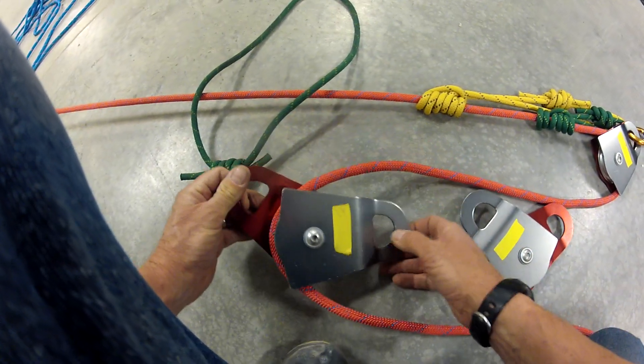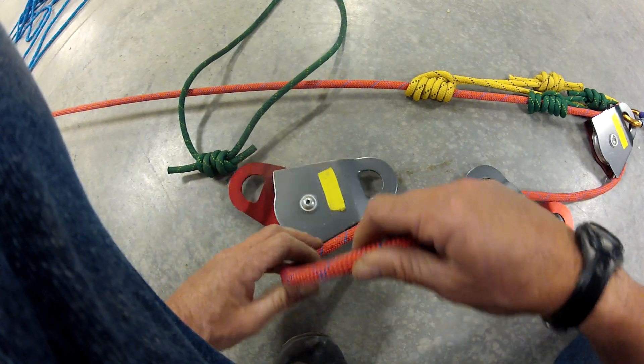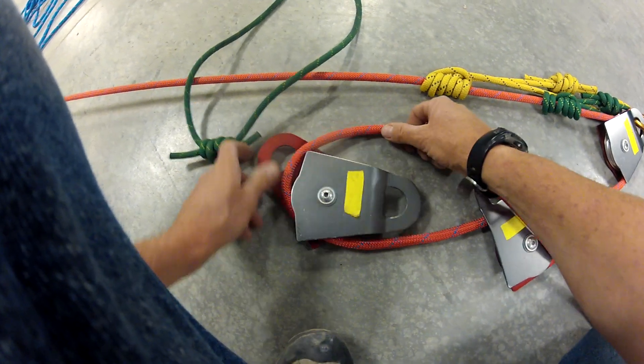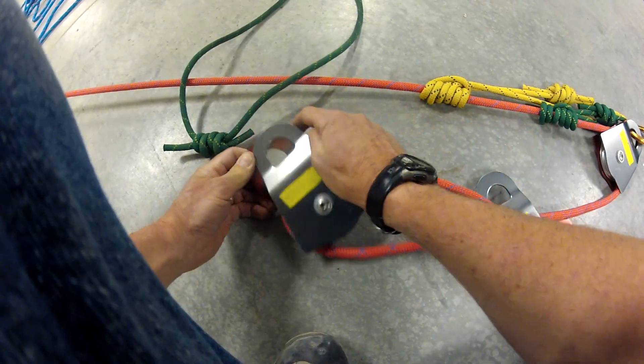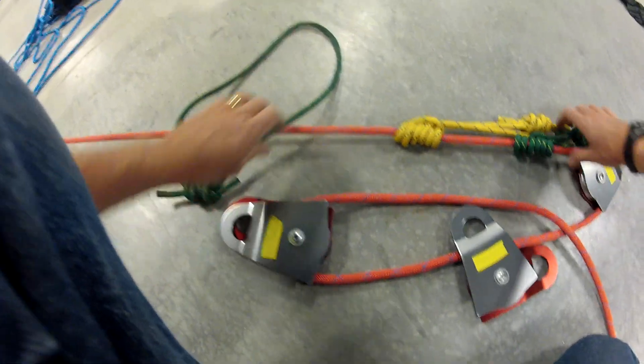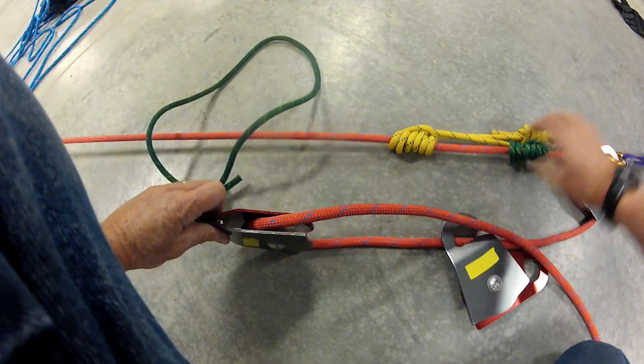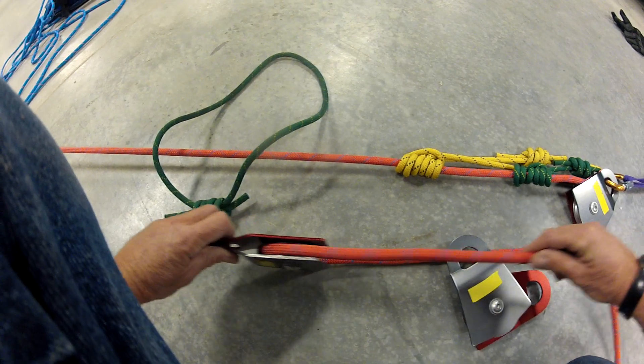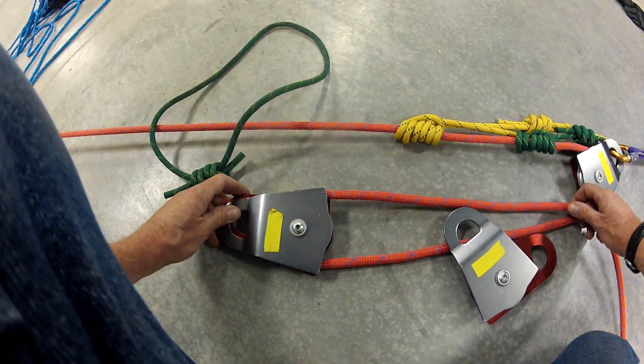Now, an alternate method, and this is the way I like to do it, is to go around on this. The reason I do that is because if this is off the ground, this will rotate down, and my direction of pull will be up on the top of the pulley, and it'll keep it cleaner.